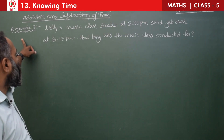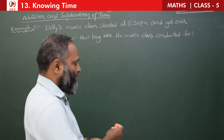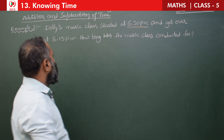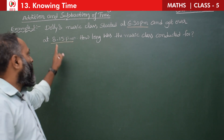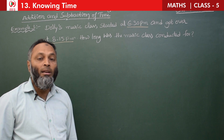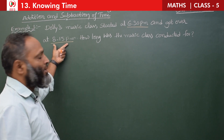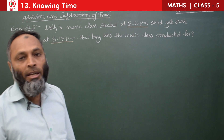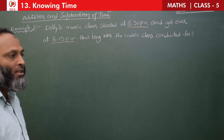Next, Example 3: Dolly's music class started at 6:30 PM and got over at 8:15 PM. How long was the music class conducted? Since we know the end time and start time, we subtract the start time from the end time to get the duration.